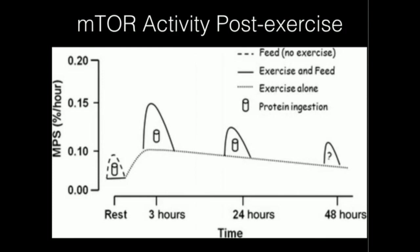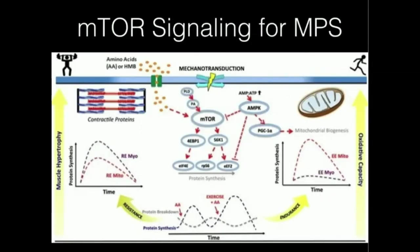To summarize: exercise will increase mTOR, but you can maximize it by having food — particularly protein with BCAAs present. Also notice that eating the meal much later than right after exercise has much less of an effect on increasing muscle protein synthesis. Your best bet is to eat pretty soon after finishing exercise. In the next video, we're going to go over biosignaling and the details of mTOR.